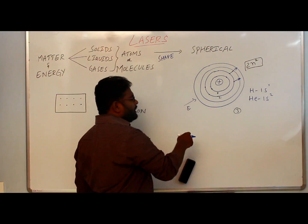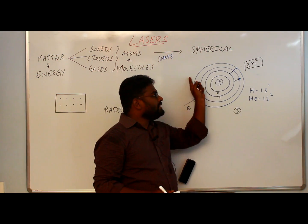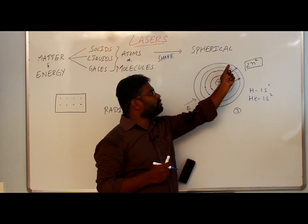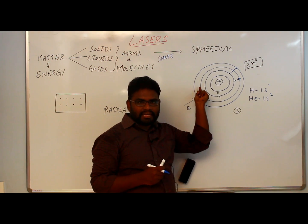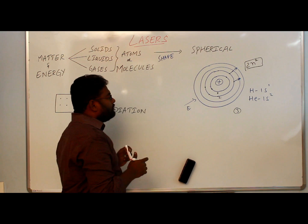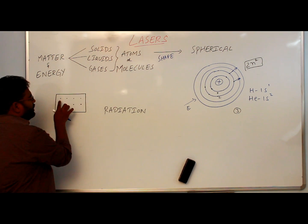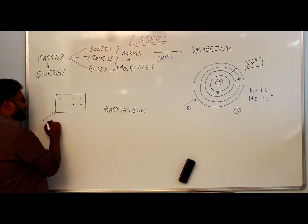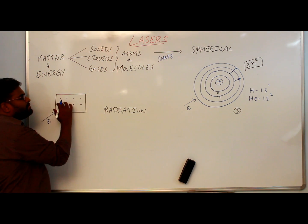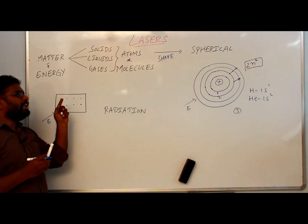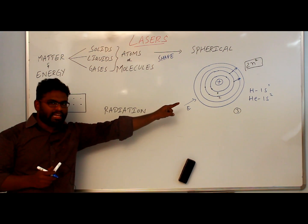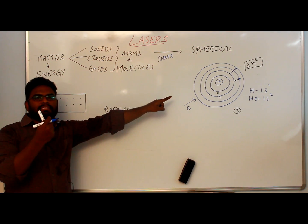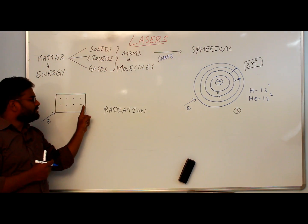When the electrons are in the excited level, the atom is said to be in the excited state. If electrons are excited, automatically the atom is also said to be in the excited state. If we consider any solid composed of atoms, by supplying energy to that solid, all the atoms will absorb energy — all the electrons in the atoms go to the excited state.